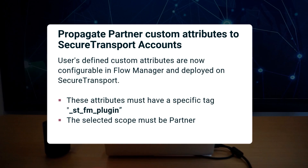As part of recent updates, we've introduced the ability to propagate partner custom attributes to secure transport accounts. Users can now configure their custom attributes in Flow Manager and deploy them on secure transport. These attributes must be tagged with SDFM plugin and set with the partner scope.